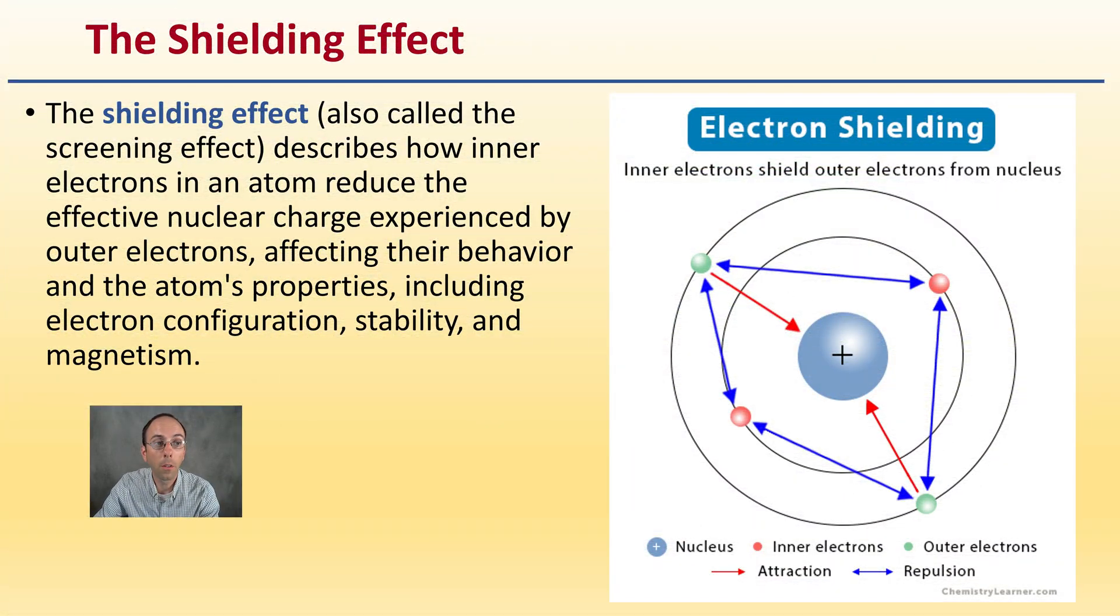The shielding effect, also called the screening effect, describes how inner electrons in an atom reduce the effective nuclear charge experienced by outer electrons. This affects their behavior and the atom's properties, including electron configuration, stability, and magnetism.